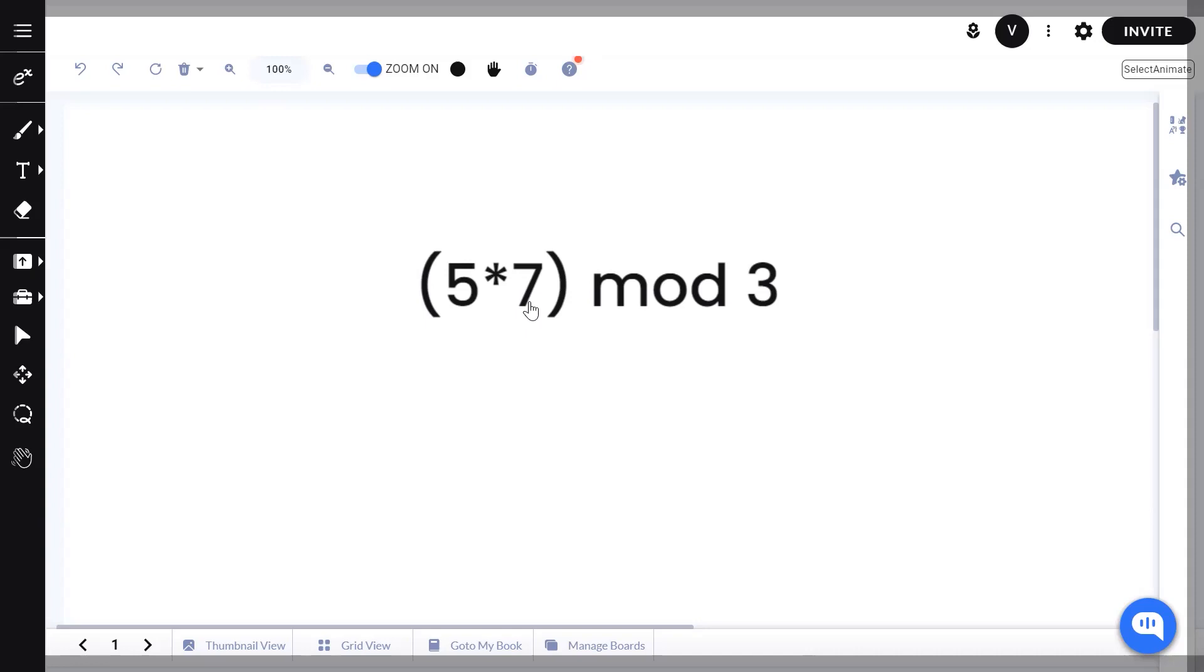Now, a quick 10 second intro about modulo even though you already know it. 10 mod 4 is going to be 2. Why? The closest multiple of 4 is 8 and the excess, the remainder is going to be 2. Modulo essentially returns the remainder.